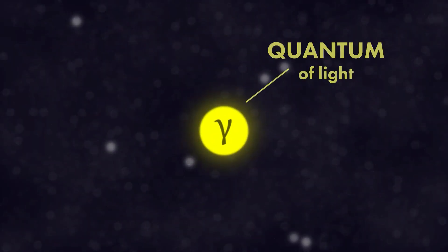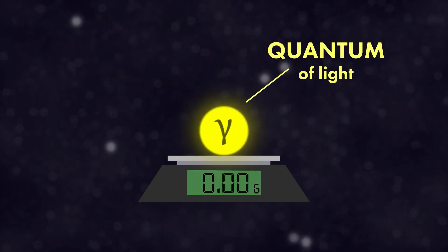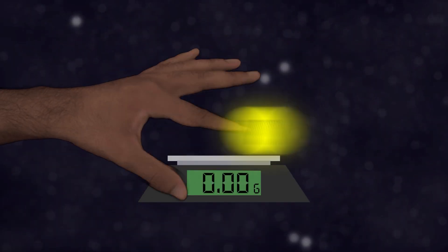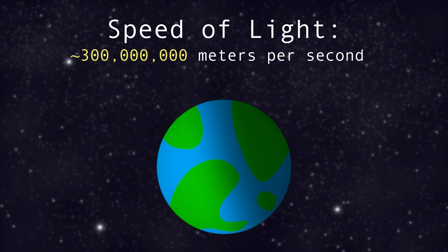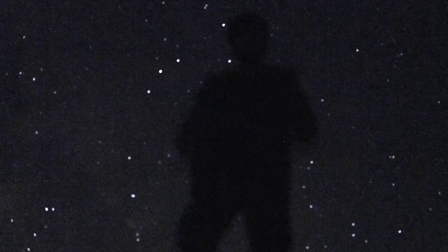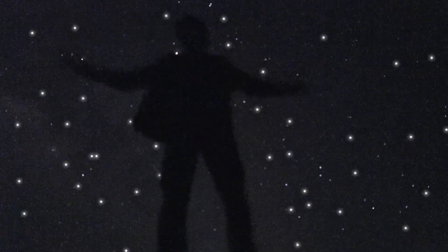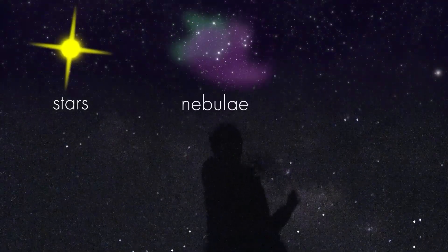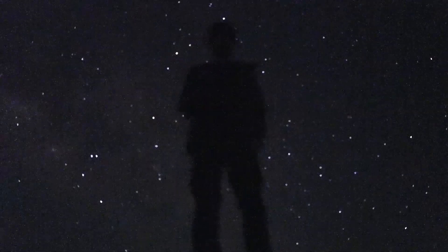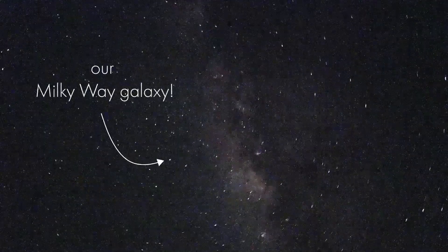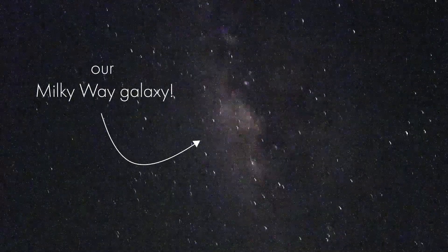Now, since each photon — a quantum of light — has zero mass, it travels at the fastest speed possible. And because light has reached nearly everything in the cosmos, like stars, nebulae, galaxies, that makes light the ideal messenger, allowing us humans to see things beyond our wildest imagination.